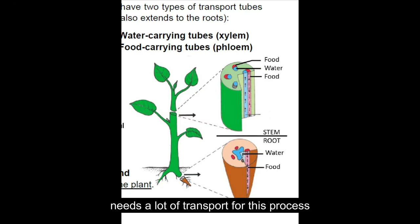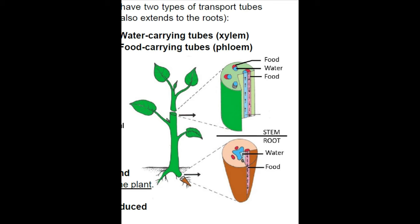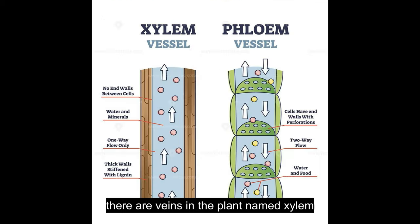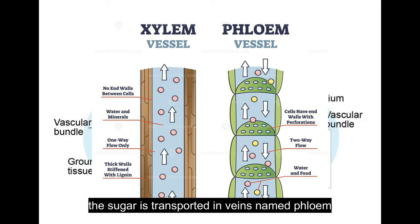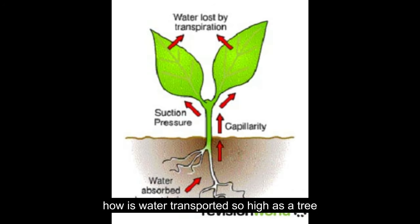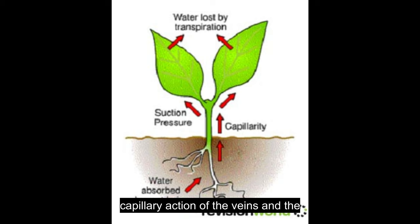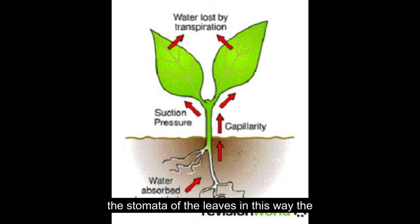Plants need a lot of transport for this process. There are veins in the plant named xylem that transport water and minerals to the whole plant. The sugar is transported in veins named phloem. How is water transported so high as a tree? Because of pump cells in the root, the capillary action of the veins and the suction of the evaporation of water from the stomata of the leaves. In this way the water can be transported over 100 meters high.